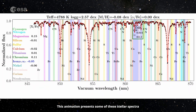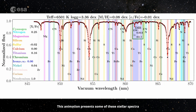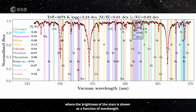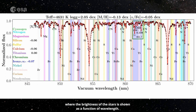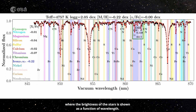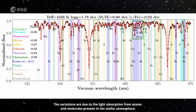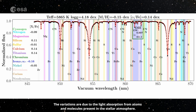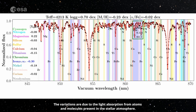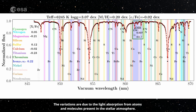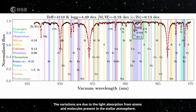This animation presents some of these stellar spectra where the brightness of the stars is shown as a function of wavelength. The variations are due to the light absorption from atoms and molecules present in the stellar atmosphere.